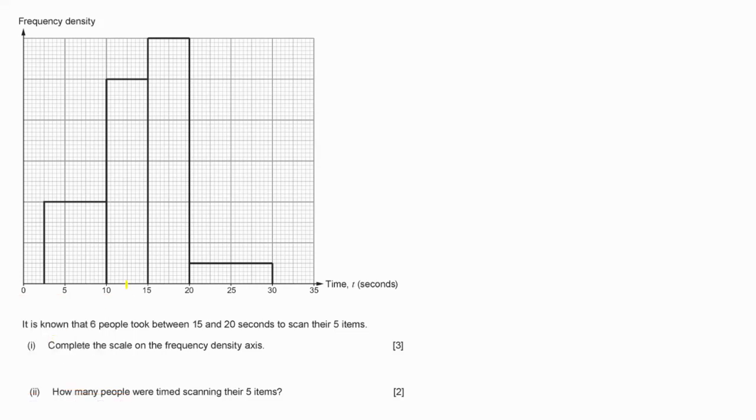Right, so between 15 and 20 is this bar here. This bar here is 15 to 20. Let me give you a bit of a shade. This bar here. So, all that bar there stands for six people. So, this whole bar here is worth six people. So, my thought process now, if I think about this bar. See, this bar is from 15 to 20, so it's 5 wide, and the area is 6.